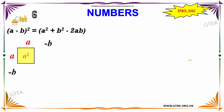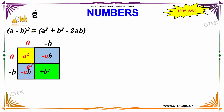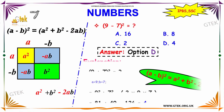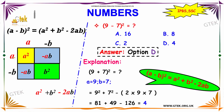Now we'll move on to a minus b whole square. The formula is a square plus b square minus 2ab. We can see a minus b expanded: a into a is a square, a into b is minus ab, minus b into a is minus ab, and minus b into minus b is b square.